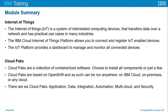The Internet of Things is a system of interrelated computing devices that transfers data over a network, with practical use cases in many industries. IBM Cloud IoT platform allows connecting and registering IoT-enabled devices and provides a dashboard to monitor and manage connected devices. Cloud Packs are containerized software and you can install all or just a few components. Cloud Packs are based on OpenShift and can run anywhere on IBM Cloud, on-premise, or any other cloud, as long as OpenShift is installed first. There are six Cloud Packs: Application, Data, Integration, Automation, Multi-Cloud, and Security.